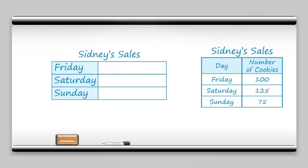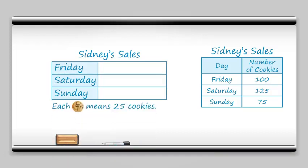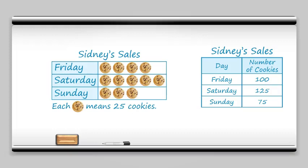What we need to do is make each cookie worth more than one cookie. That would help us. So with the values of 100, 125, and 75, if each cookie were to be worth 25 cookies, that would make things nice and pretty. If I want to count 100 by 25s, I do 25, then 50, then 75, then 100. On Saturday it's 125, so that's just one extra cookie. And then on Sunday it's 75, so 25, 50, 75. And just like that, you've made a picture graph. Good job.